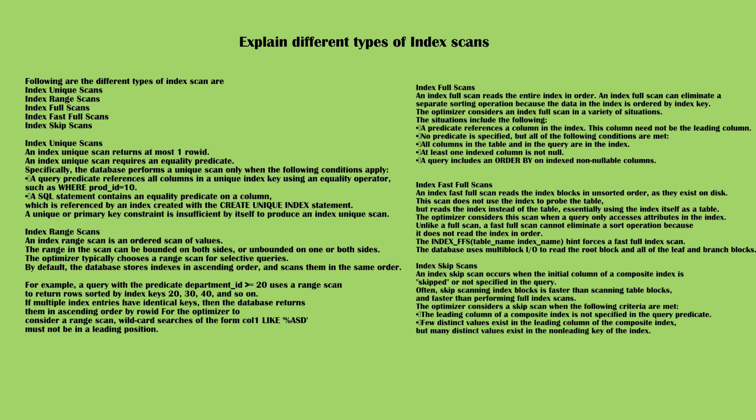Index unique scans: an index unique scan returns at most one row ID. An index unique scan requires an equality predicate. Specifically, the database performs a unique scan only when the following conditions apply.